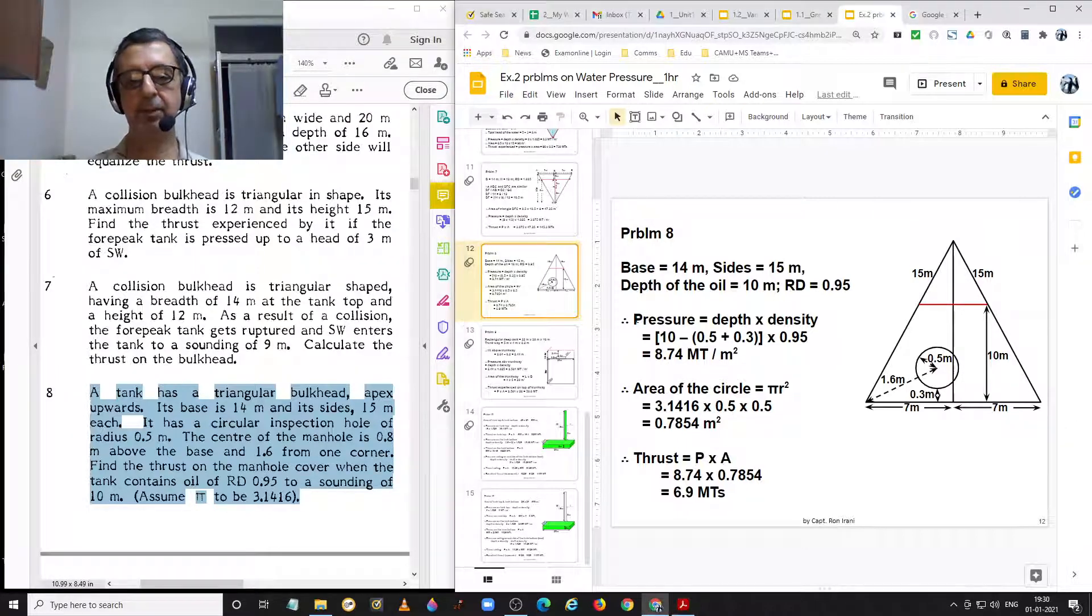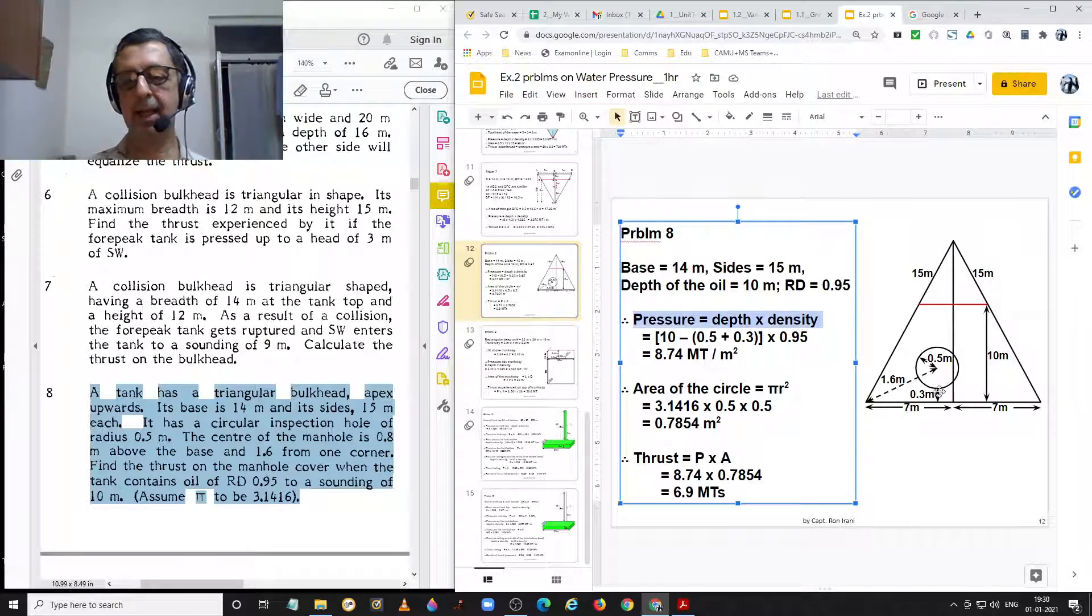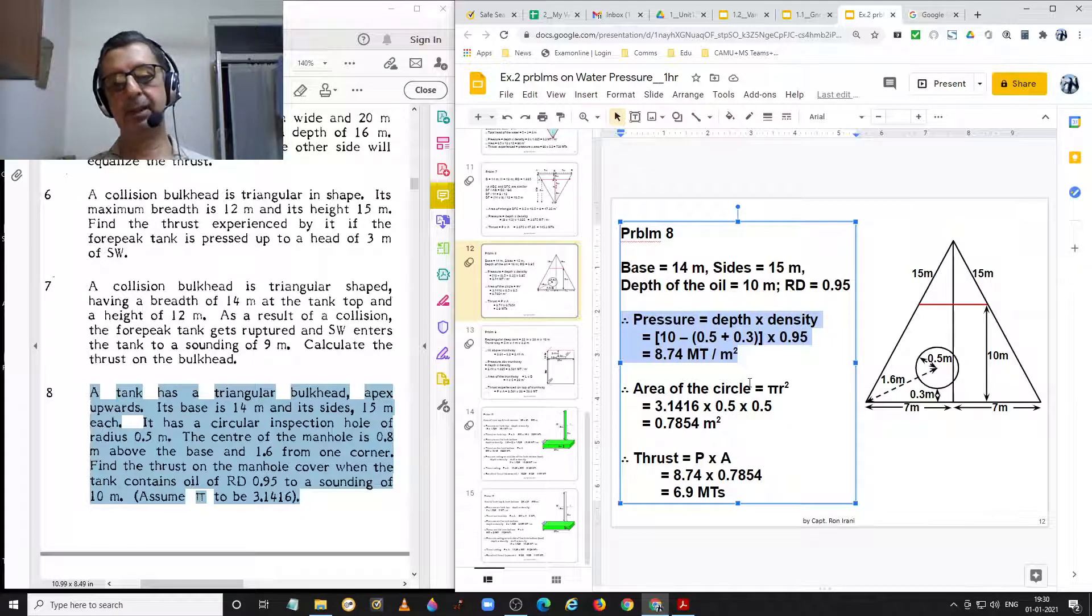So, pressure is equal to depth into density. And the depth as I just calculated for you is equal to 10 minus 0.8 equal to 9.2. And multiplied by the density of the liquid in the tank that is 0.95 given to us in the problem. The pressure therefore works out to 8.74 metric tons per square meter.